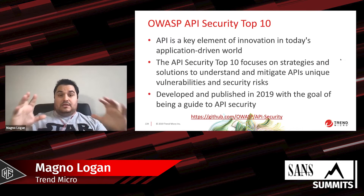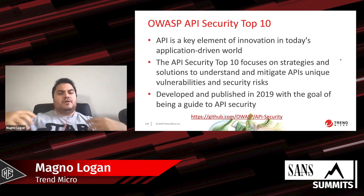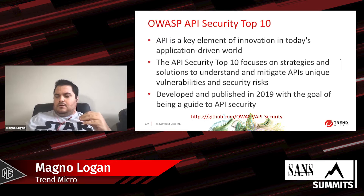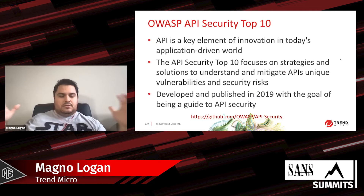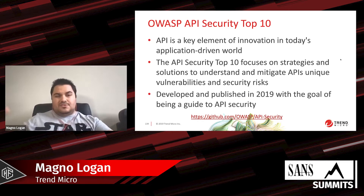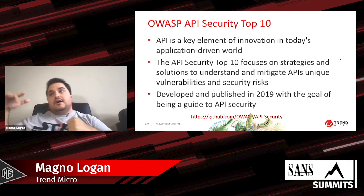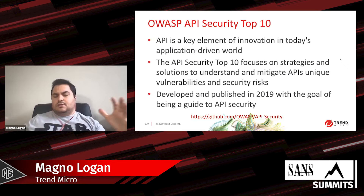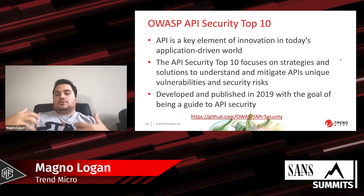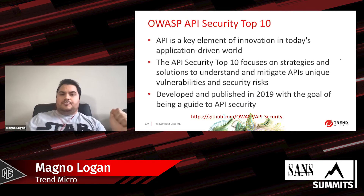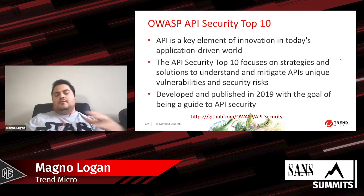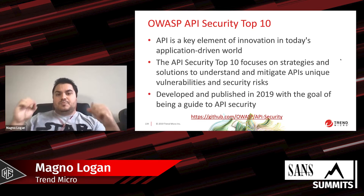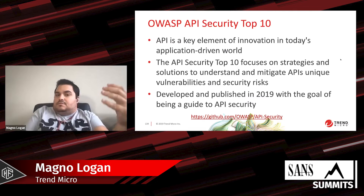Maybe you already know about these topics and have started your API journey — how can you improve your skills? I tell people starting in AppSec that the OWASP Top 10 is a must-read, but there are many different top tens now — the standard top 10, the proactive controls, the mobile top 10, and now the API Security Top 10. If you're starting with API testing, I'd say start with the API Security Top 10, which is a list of the most common risks on APIs, published in 2019.